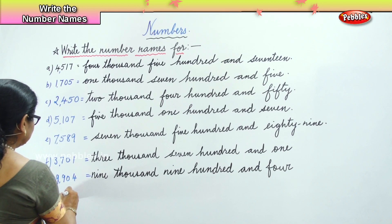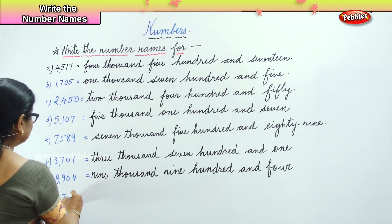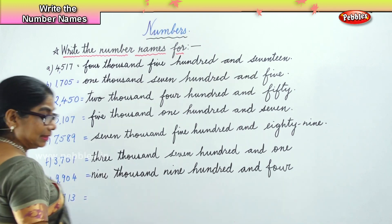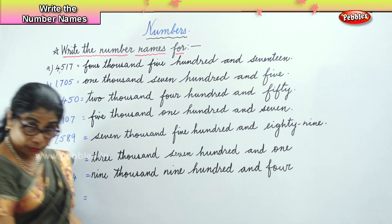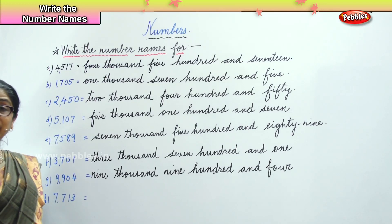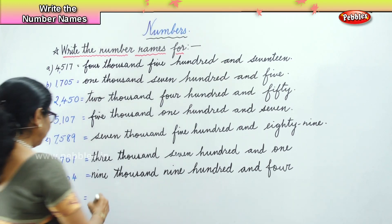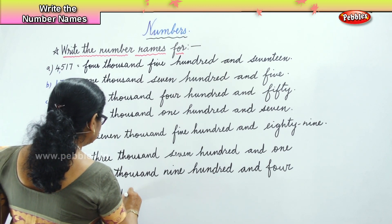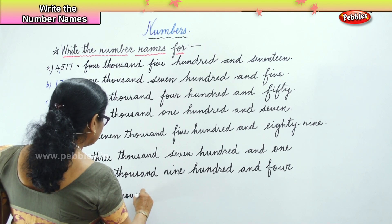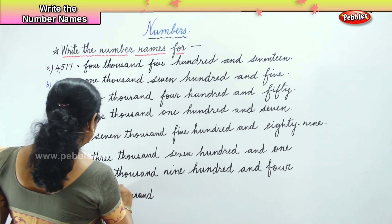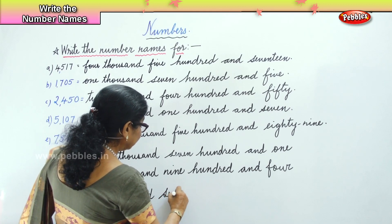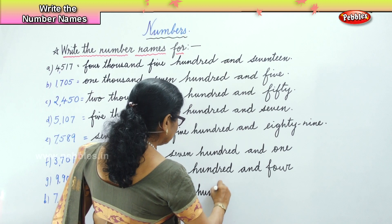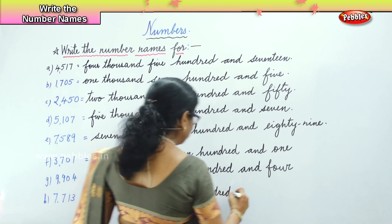The next number is 7713. Let's read this number. Seven thousand seven hundred and thirteen. Very good. Seven thousand, seven hundred and thirteen.